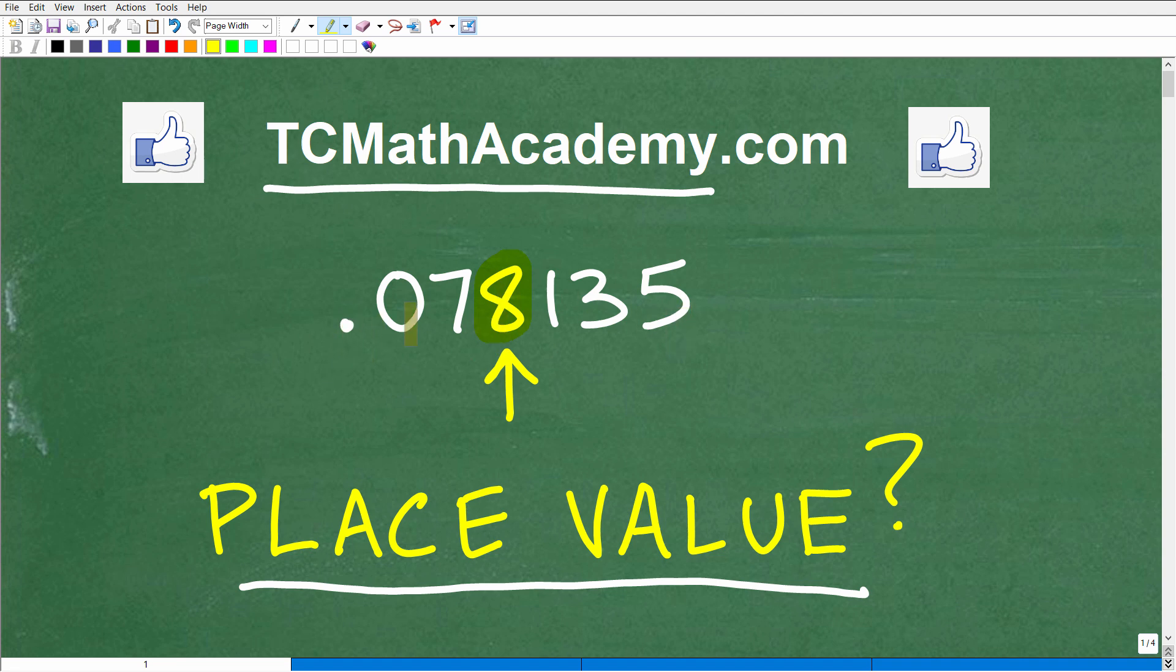So we have the decimal 0.078135. The 8, this particular digit in this decimal, is located at what place value?